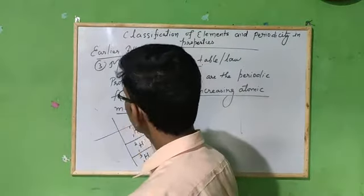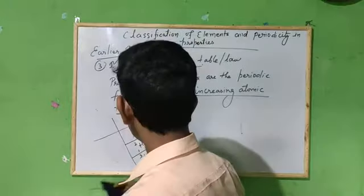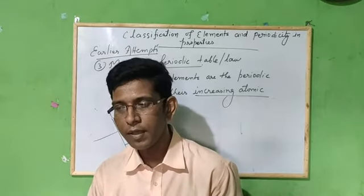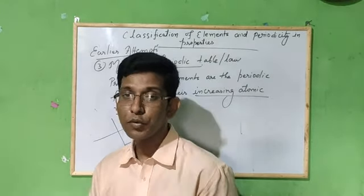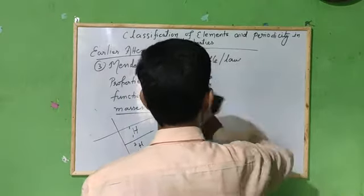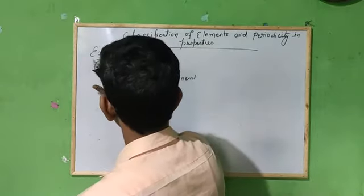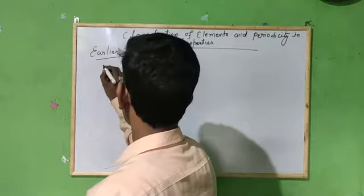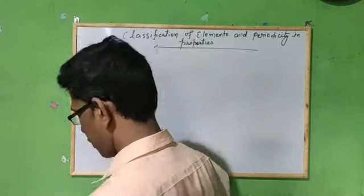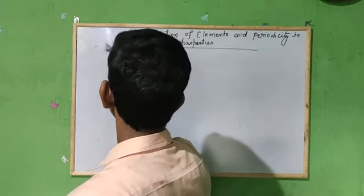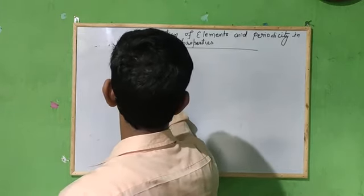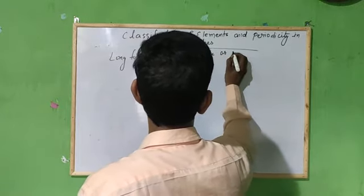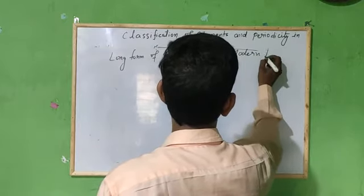After the limitations of Mendeleev's table, a new and most acceptable table came — the Modern Periodic Table, also called the Long Form of the Periodic Table.